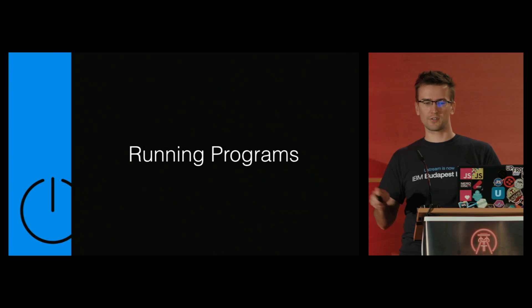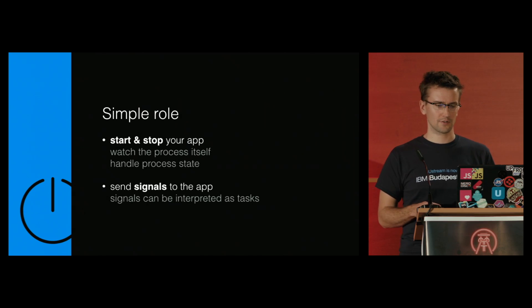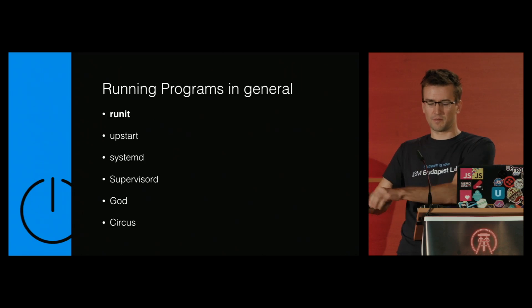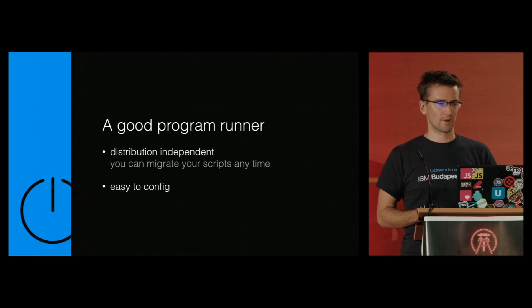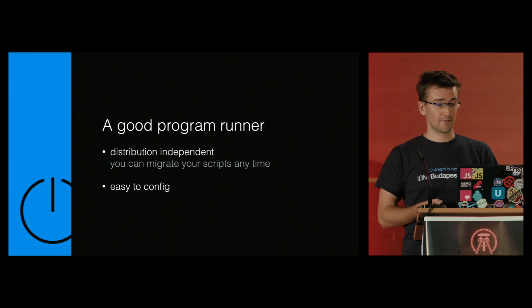Another related quick topic is how do you actually start your Node service or any other service. A program runner or daemon runner has to do only a few things: stop and start the application, know about the state of the app — is it running or not — and be able to send signals to the application. You can use system signals to do custom tasks like turn on debug mode. I found Runit a year ago and was like "where was this tool when I was juggling with init scripts and start-stop-daemon on Debian." Runit is distribution-independent, easy to configure — you just put your start command in a file with all its parameters and Runit uses that as a command to start and handles everything else. You just say stop or start. That's it.